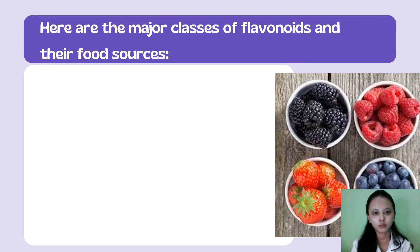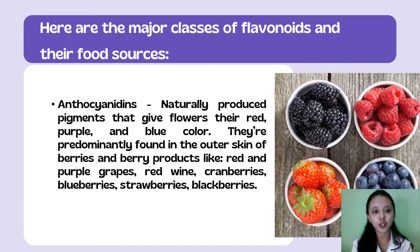For the last major class of flavonoids, we have anthocyanidins — naturally produced pigments that give flowers their red, purple, and blue color. They are predominantly found in the outer skin of berries and berry products, like red and purple grapes, red wine, cranberries, blueberries, strawberries, and blackberries.